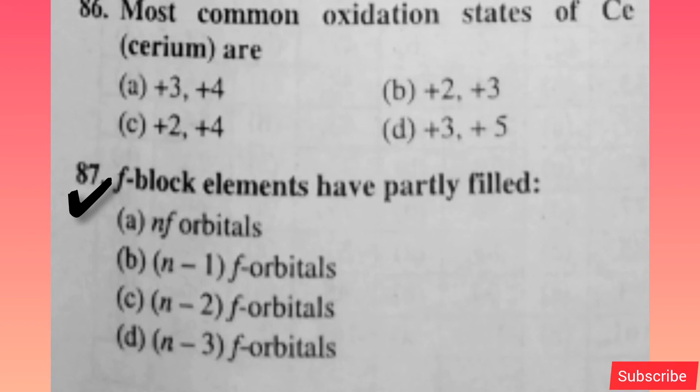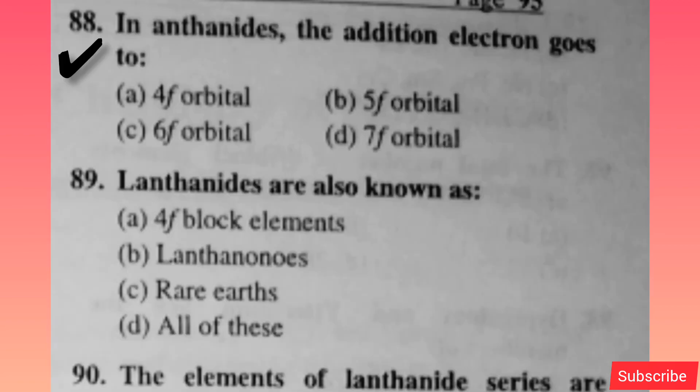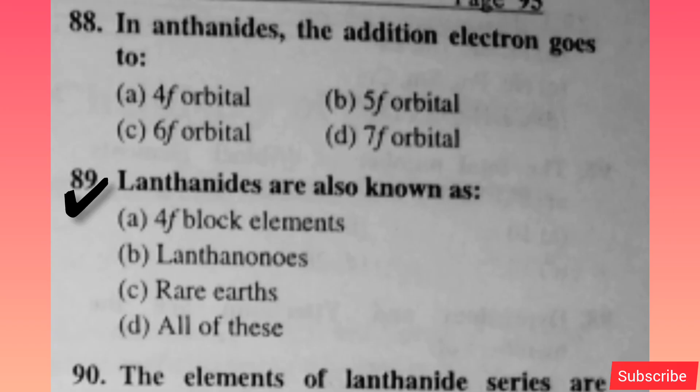The most common oxidation states of Ce are — option A is correct. F-block elements have partly filled f orbitals — option A is correct. In lanthanides, the additional electron goes to — option A is correct. Lanthanides are also known as — option D is correct.